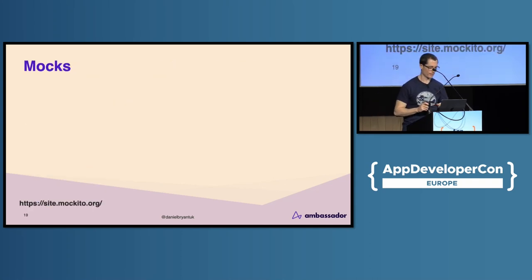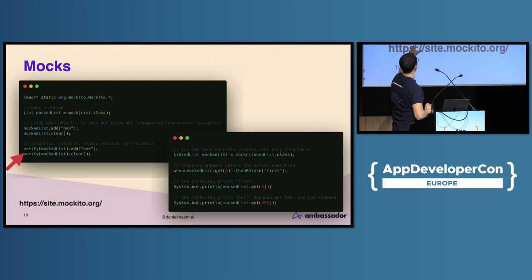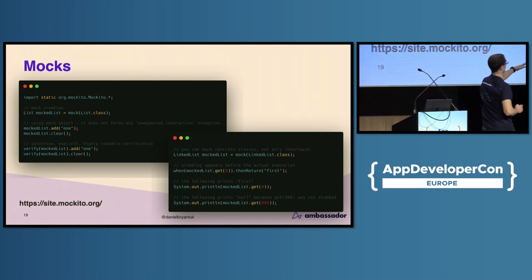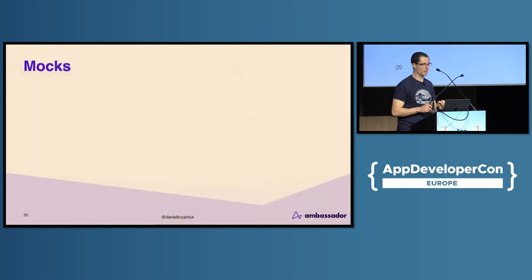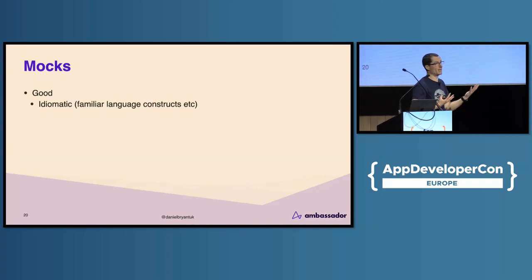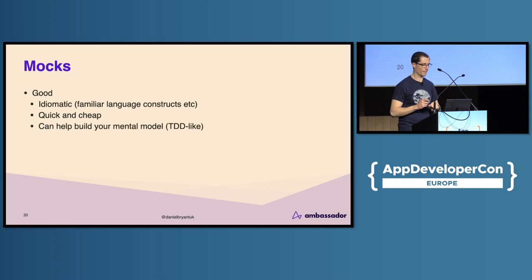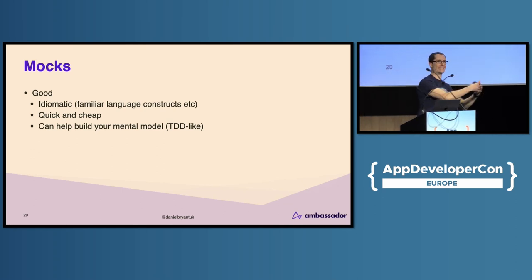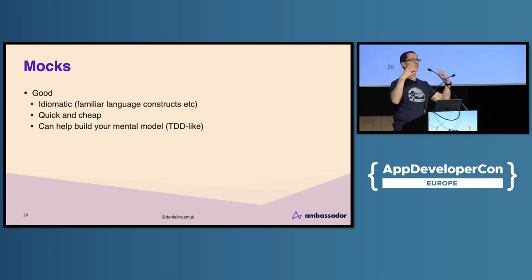With the tech in mind, let's have a look at mocks. This is the kind of thing I'm thinking of: I can verify interactions, I can stub data — happy days. It's a level set of what I'm talking about with mocks. The good: they are idiomatic — if I know Java and I'm working with a Java mocking framework, the learning curve is pretty light. Quick and cheap. Super easy to do verifications, super easy to do stubbed calls. And if you're building out a component you're mocking, it can be a great way to build your mental model — kind of outside-in TDD. You're literally prototyping the API and interface before building out the back end.